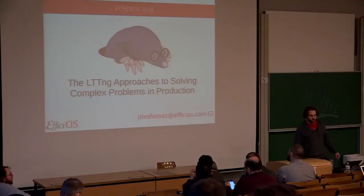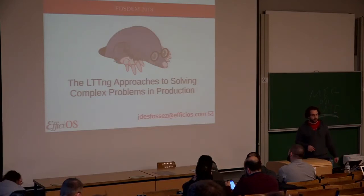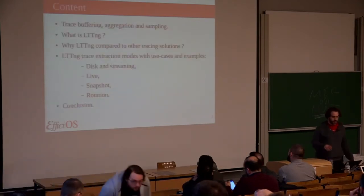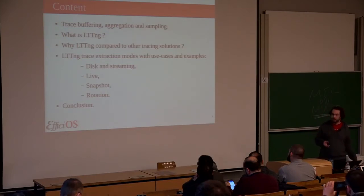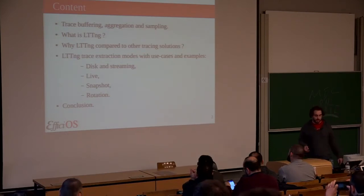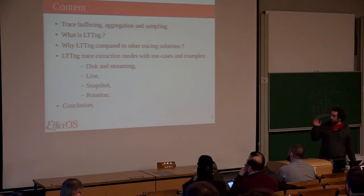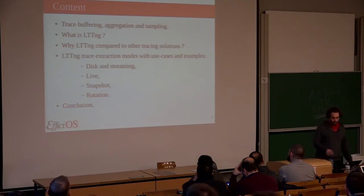Today I'm going to talk about LTTng and how we can use it to solve complex problems in production. The topics we cover are tracing — the different kinds of tracing, because usually there is a mix between trace buffering, aggregation, and sampling. Then we talk about what LTTng is and why we want to use it for these kinds of use cases. And then we discuss the four main modes of LTTng and how to configure them and why they are useful for various use cases.